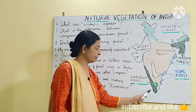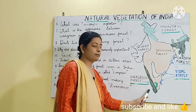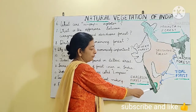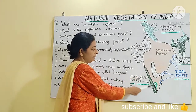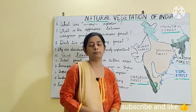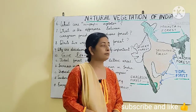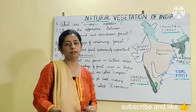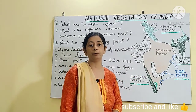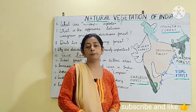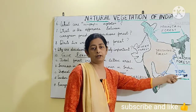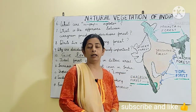Evergreen forests are present in areas which receive very heavy rainfall, that is above 200 cm, such as the western slopes of the Western Ghats where the Bay of Bengal branch hits the western coast first. You can also give other differences: in deciduous forests, important tree species are sal, teak, and others which are economically valuable. In evergreen forests, important species include mahogany, ebony, and rosewood.